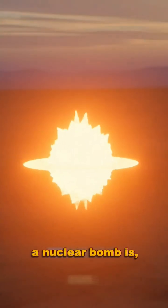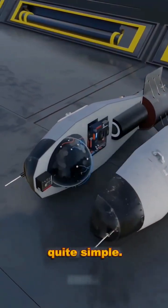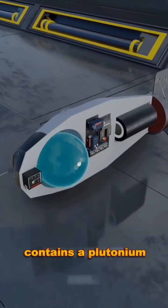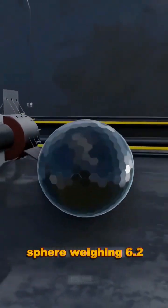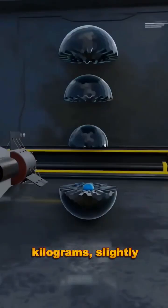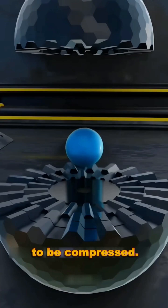As deadly as a nuclear bomb is, its operating mechanism is quite simple. This nuclear bomb contains a plutonium sphere weighing 6.2 kilograms, slightly larger than 4 inches, which needs to be compressed.